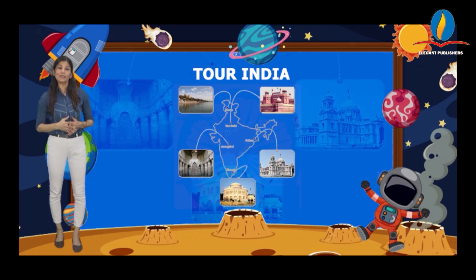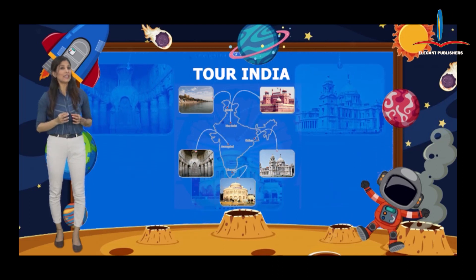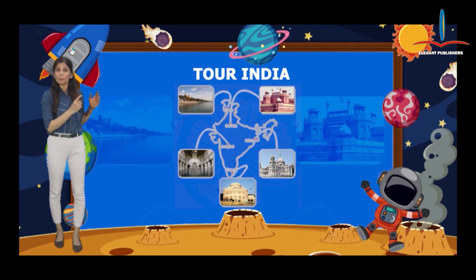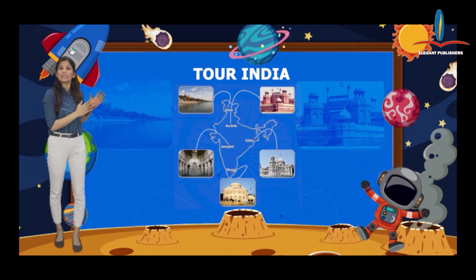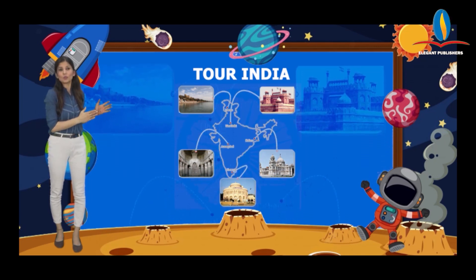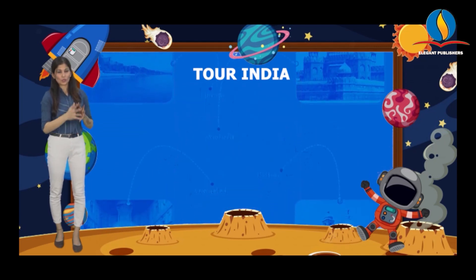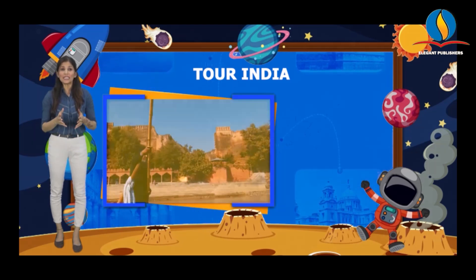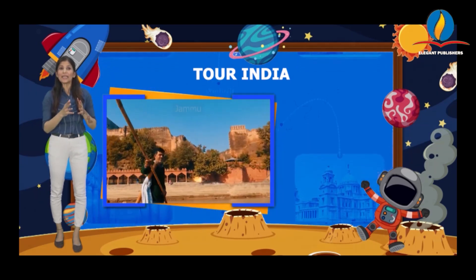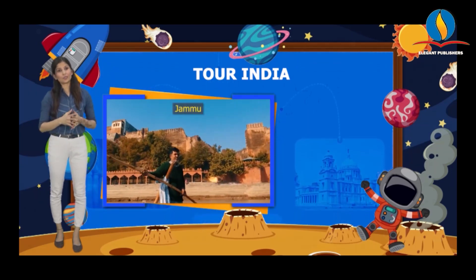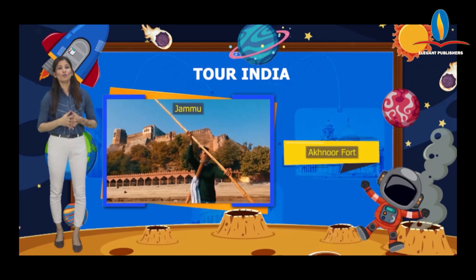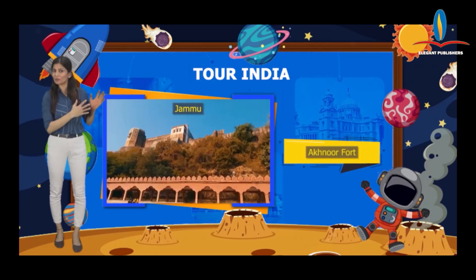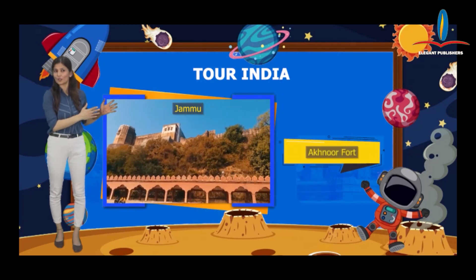It is very easy to recognize because each picture is connected to the related city. In the first picture, you can see this place is connected to Jammu. It's Akhnur Fort. So what you have to write in the answer? Akhnur Fort.